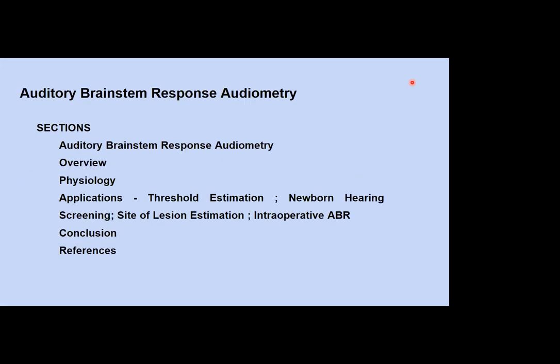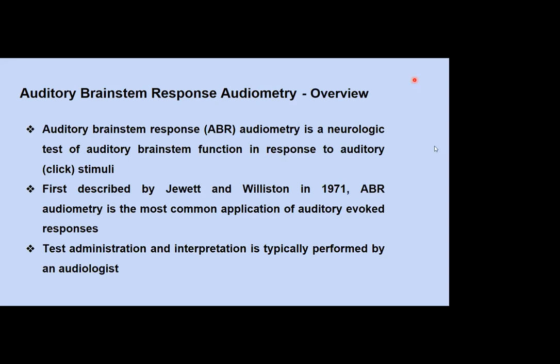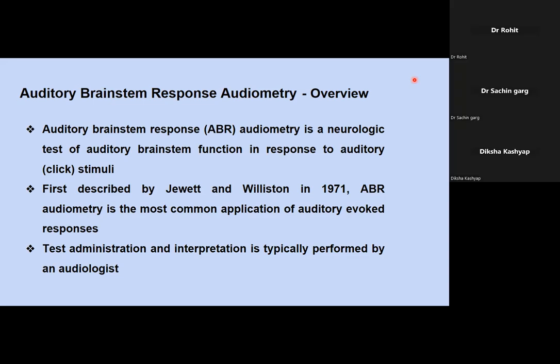Moving to Auditory Brainstem Response (ABR) audiometry. We will cover the audiometry overview, ABR overview, physiology, applications, and conclusions. ABR is a neurologic test of auditory brainstem function in response to auditory stimuli — usually clicks are used. It was discovered and reported in 1971 by Jewett and Williston and has become the most common application of auditory evoked responses.